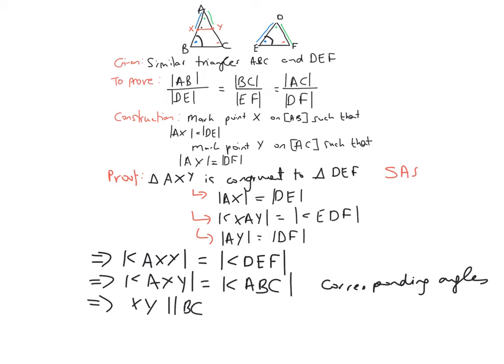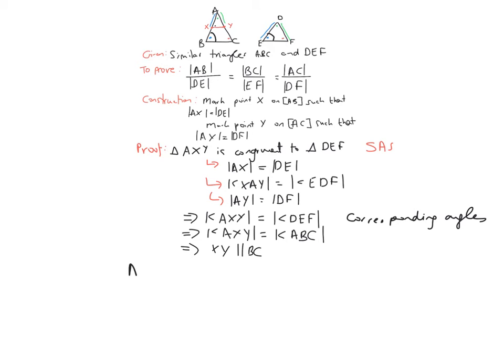We can therefore start comparing the sides of our main triangle. So we can therefore say that AX over XB is equals to AY over YC. And we can therefore also say that AB over AX is equals to AC over AY.